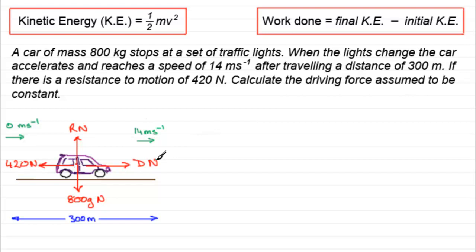Now in order to calculate the driving force assumed to be constant, what I'm going to need to do is look at the work done by the resultant force as we go from rest up to 14 meters per second. That resultant force is going to be to the right, and these two forces, the weight and the normal contact force, are not going to have any effect in the horizontal direction. So let's have a look at the work done by the resultant force.